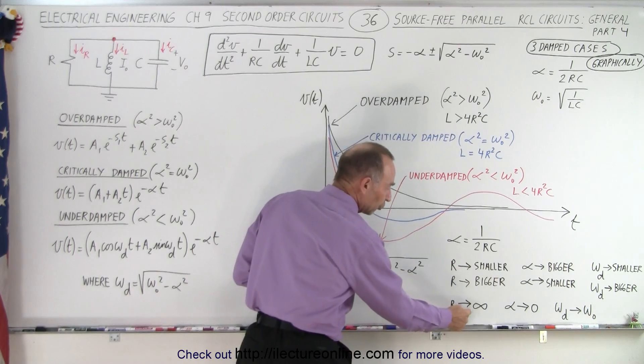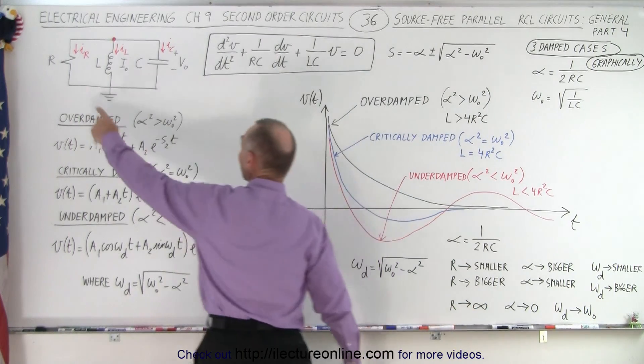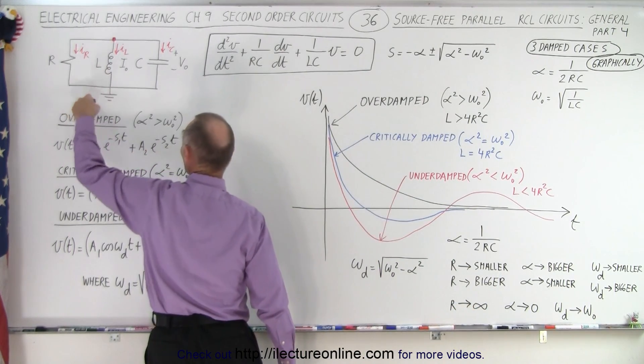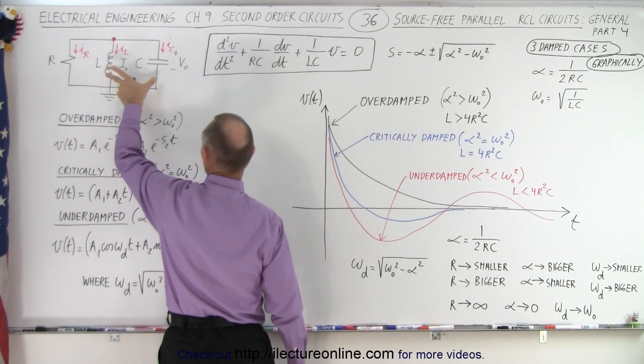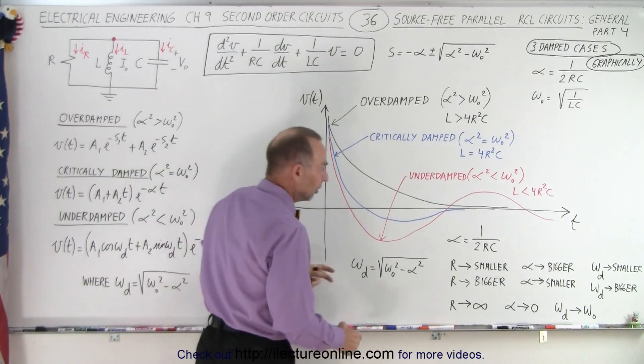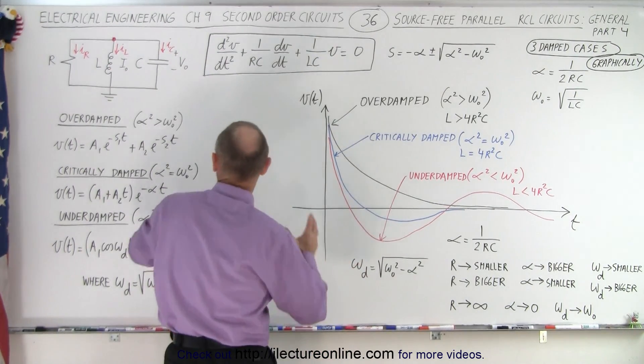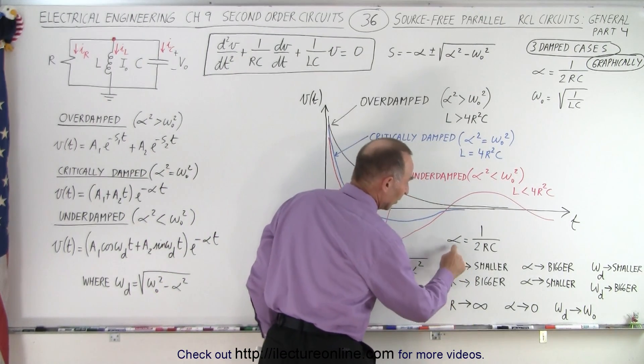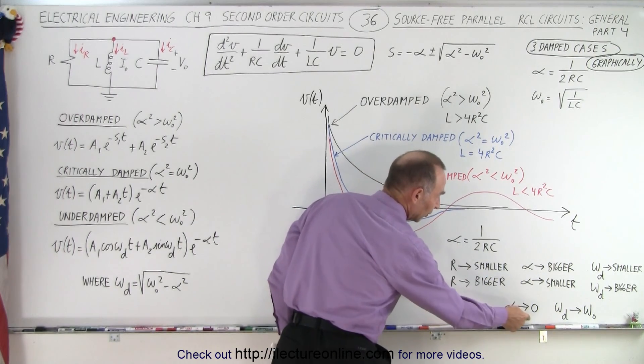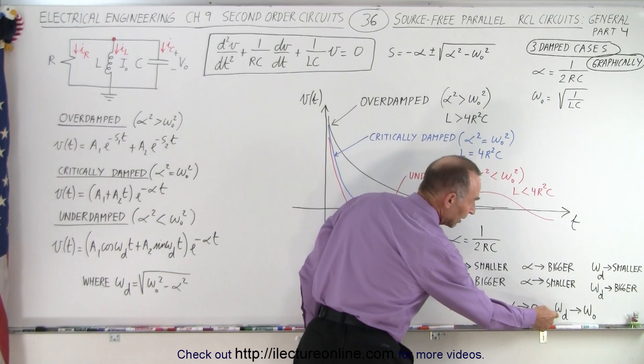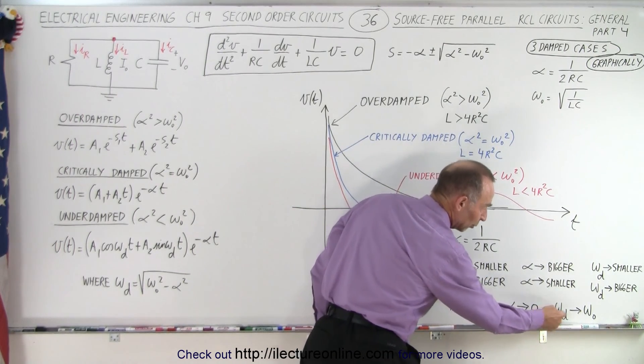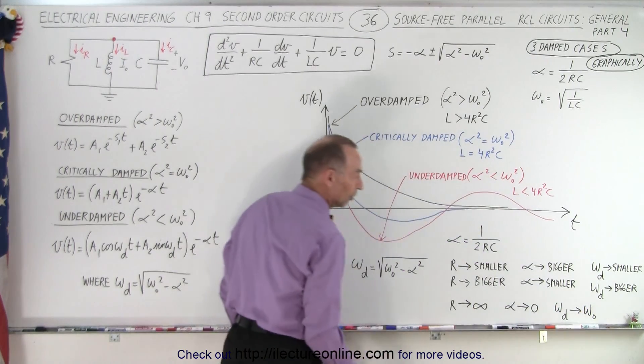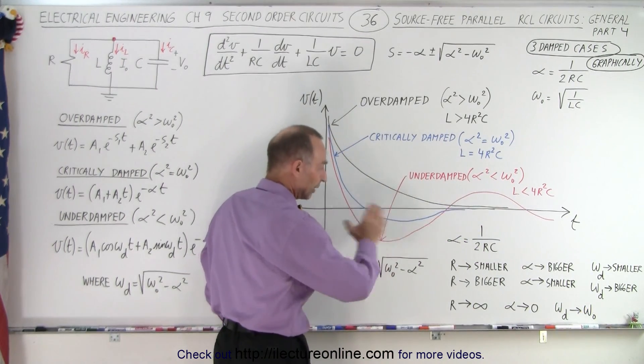And eventually, as R approaches infinity, when R becomes infinitely large, no current will flow through the resistor - all the current will go through the inductor and the capacitor. We now have a circuit without resistance, so therefore no damping. And so as R becomes infinite, alpha will go to zero. When alpha goes to zero, the damped oscillation frequency will approach the natural oscillation frequency of the circuit without the resistor.